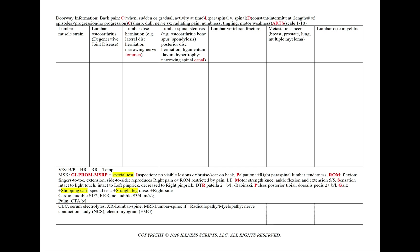To help characterize the pain, we'd like some descriptors — sharp or dull among others — and since it could involve the nerves, we can ask now or later in our review of symptoms about any radiating pain, numbness, tingling, or motor weakness. We'll also assess aggravating and alleviating factors, radiation, treatments tried, and severity on a scale of 1 to 10. If there are no aggravating and alleviating factors or radiation, we'll state that in our note to show we've asked.